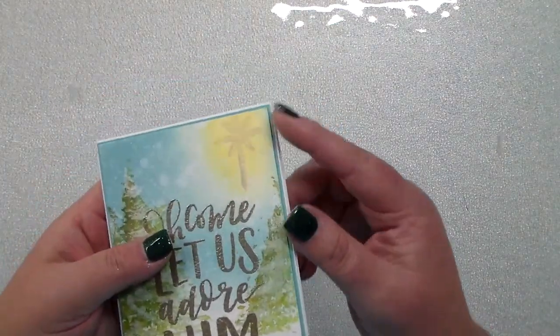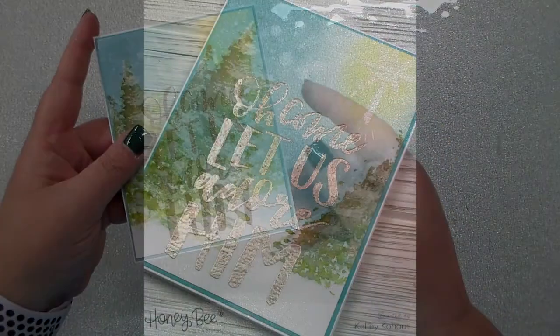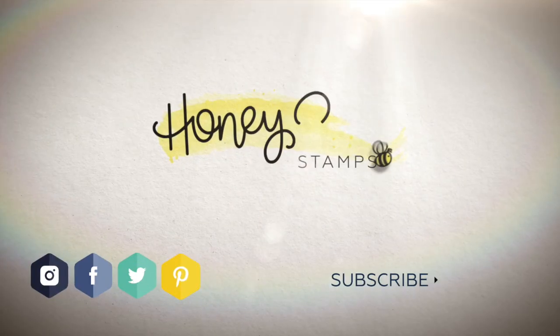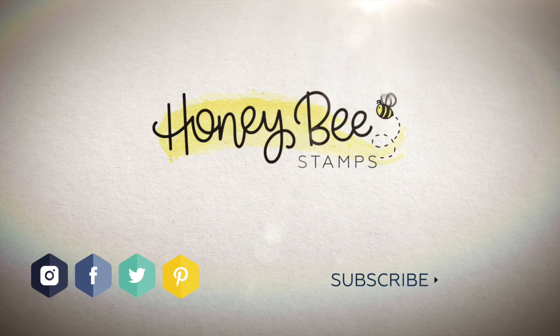So I just left it. I added that onto some coordinating cardstock that coordinates with that blue sky and added that to a white top folding card base. Here's a close-up look at the beautiful trees and I'll leave Betsy's information below. Then all these supplies can be found at honeybeestamps.com. Make sure you check everything out there and I will talk to you guys next time. Merry Christmas, bye-bye!